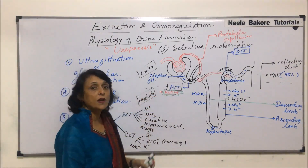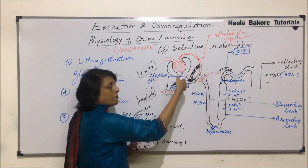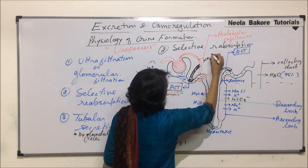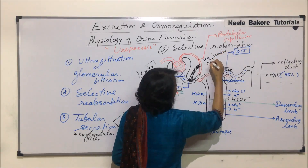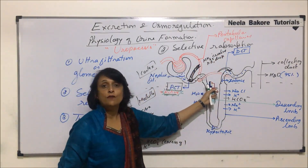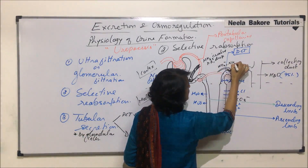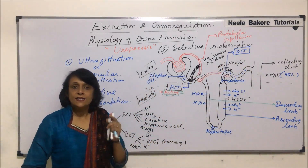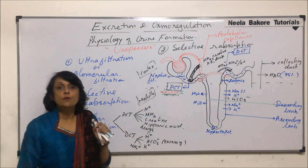To recap on the diagram: the proximal convoluted tubule (PCT) removes substances in the direction from the peritubular capillaries into the filtrate — specifically ammonia, creatine, hippuric acid, and drugs. DCT removes excess bicarbonate ions, ammonium ions, and excess potassium ions. All these substances are poured by the cells of the tubule into the filtrate. This is what exactly happens in tubular secretion.